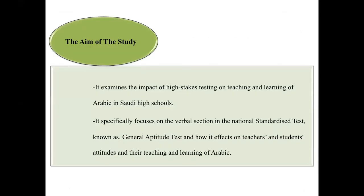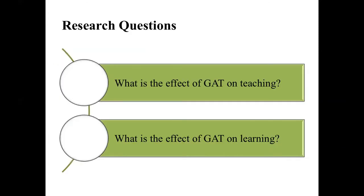The aim of this study was to examine the impact of high-stakes testing on teaching and learning of Arabic in Saudi high schools, specifically focused on the verbal section of the national standardized test known as the General Aptitude Test (GAT) and how it affects teachers' and students' attitudes and their teaching and learning of Arabic. The study answers two research questions: what is the effect of GAT on teaching, and what is the effect of GAT on learning?